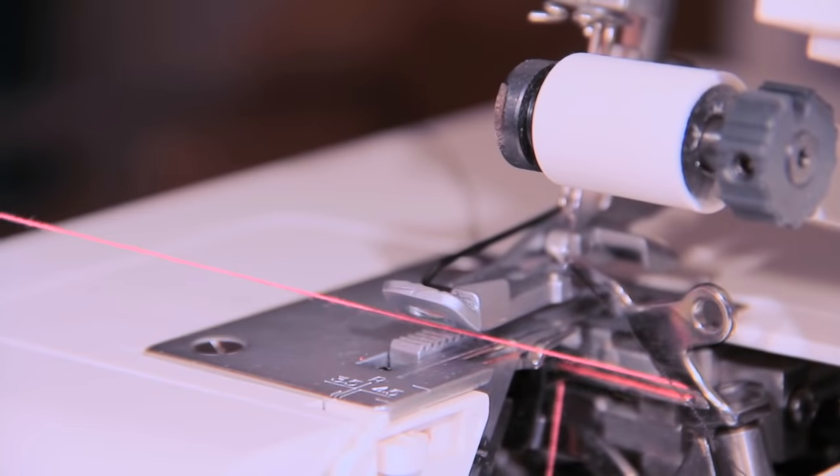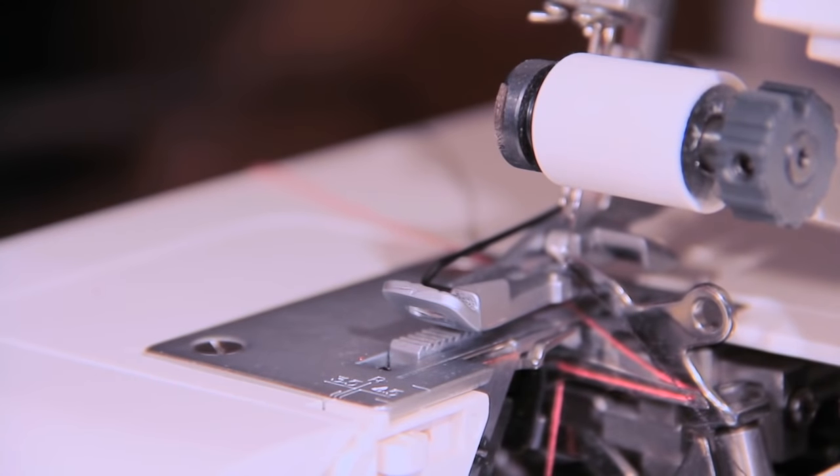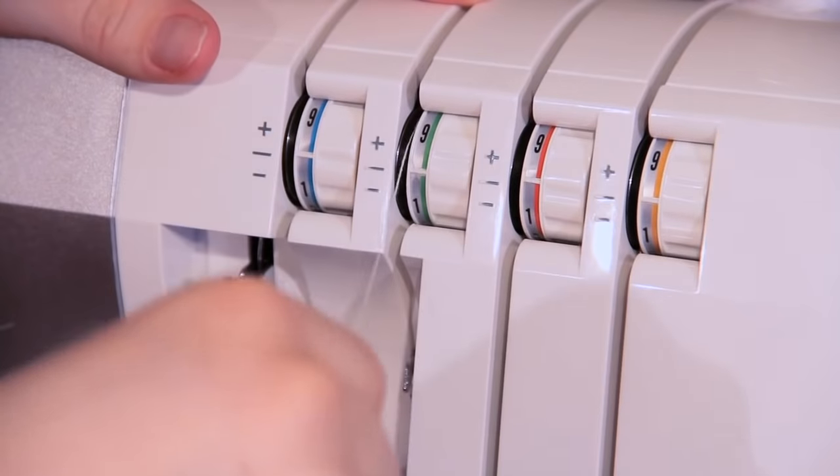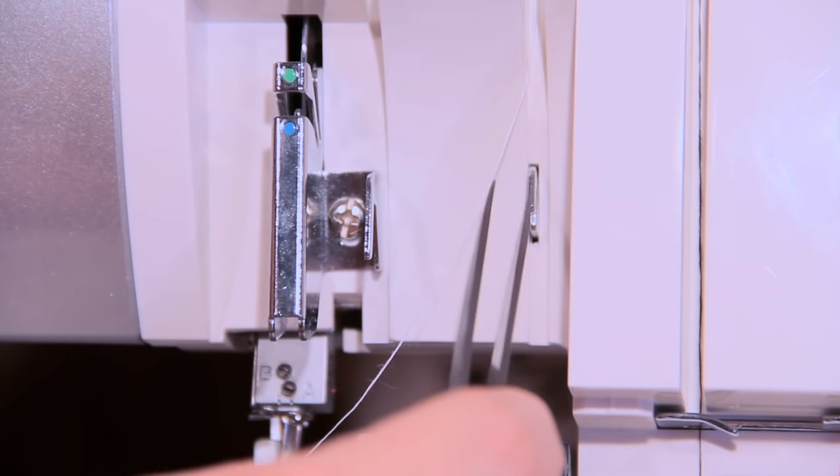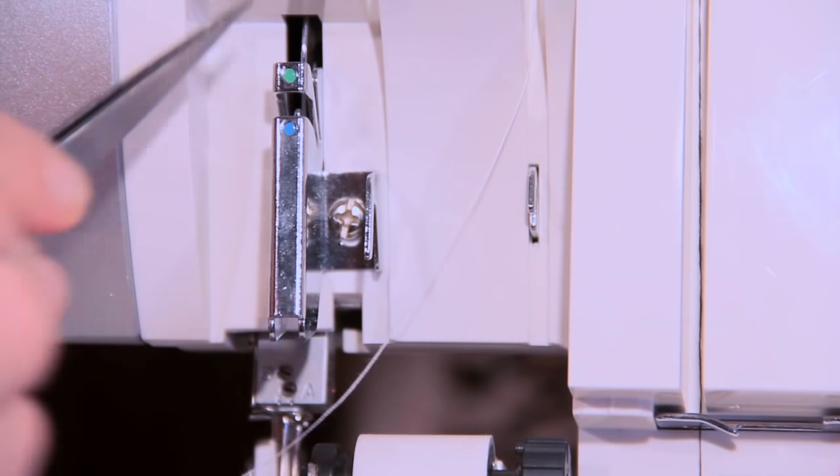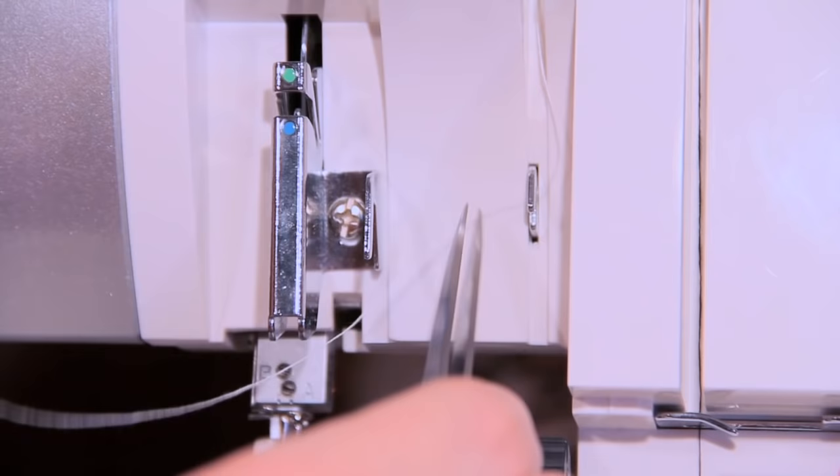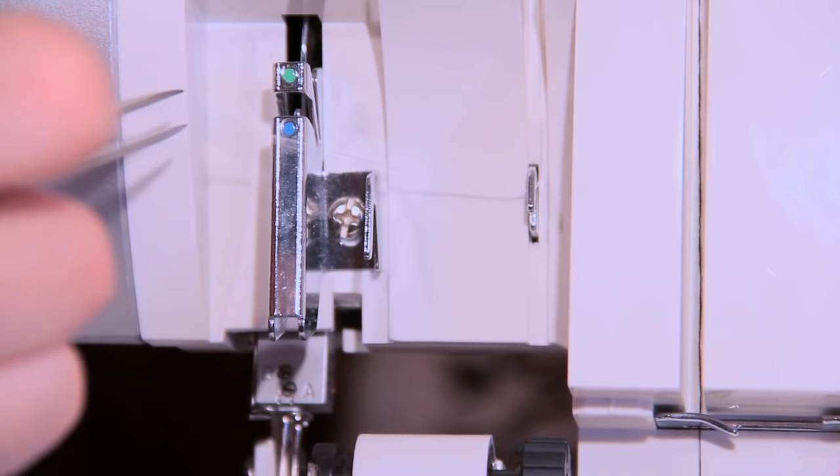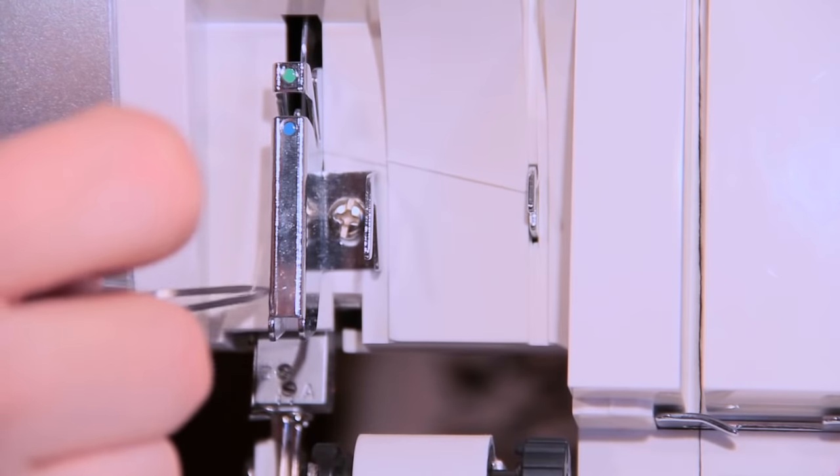And as always, take the thread and pass it behind the presser foot. Now we're on step three, the right needle. Pass it through the tension discs. Now the right needle thread will go to the green needle. So pass it through the little hook and then bring it up to the green dot and slide it behind.